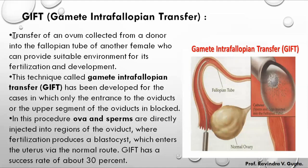The next part is GIFT — Gamete Intra-Fallopian Transfer. In this technique, instead of transferring a zygote, the egg and sperm (gametes) are transferred directly into the fallopian tube. The fertilization then takes place inside the fallopian tube, not outside. If zygote is transferred it is ZIFT; if gametes are transferred it is GIFT.